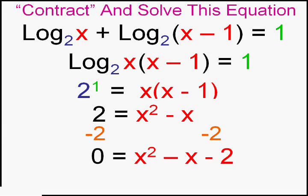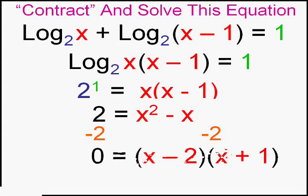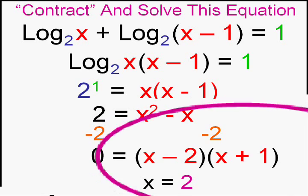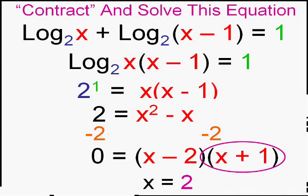I'll do that. This one is factorable, so there are two answers: what makes that zero? A positive 2. And what makes that zero? A negative 1.